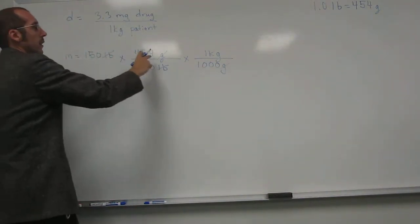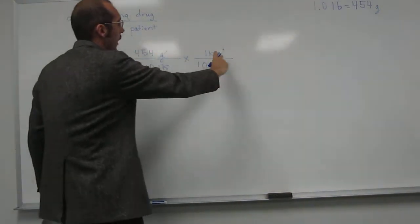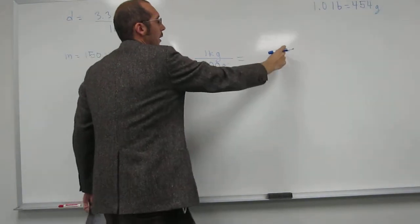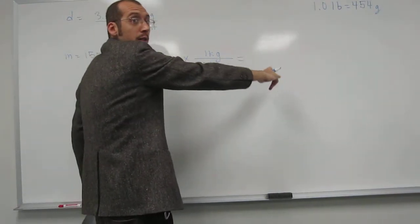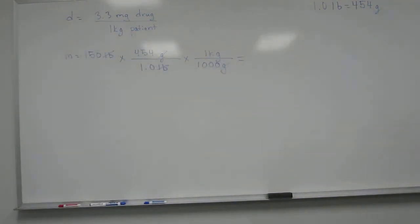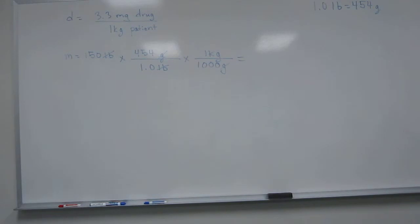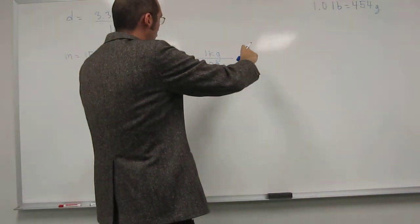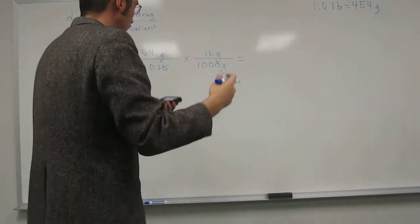Okay. So, now we've got, so now if we multiply out our units on the top are kilograms, multiply out on the bottom, they're nothing. So, our total units are kilograms. So, let's go ahead and multiply that up.